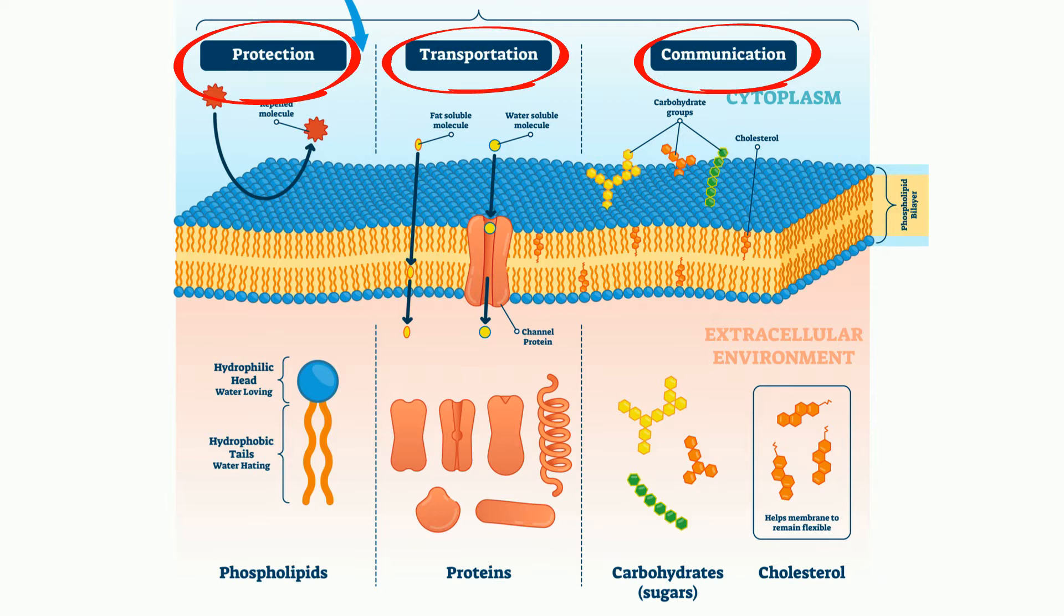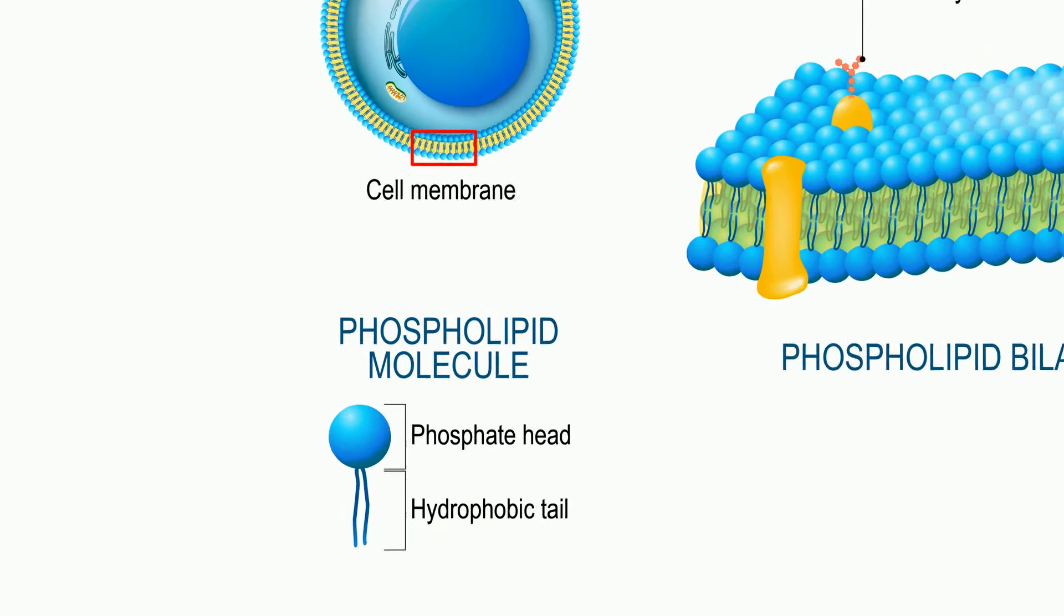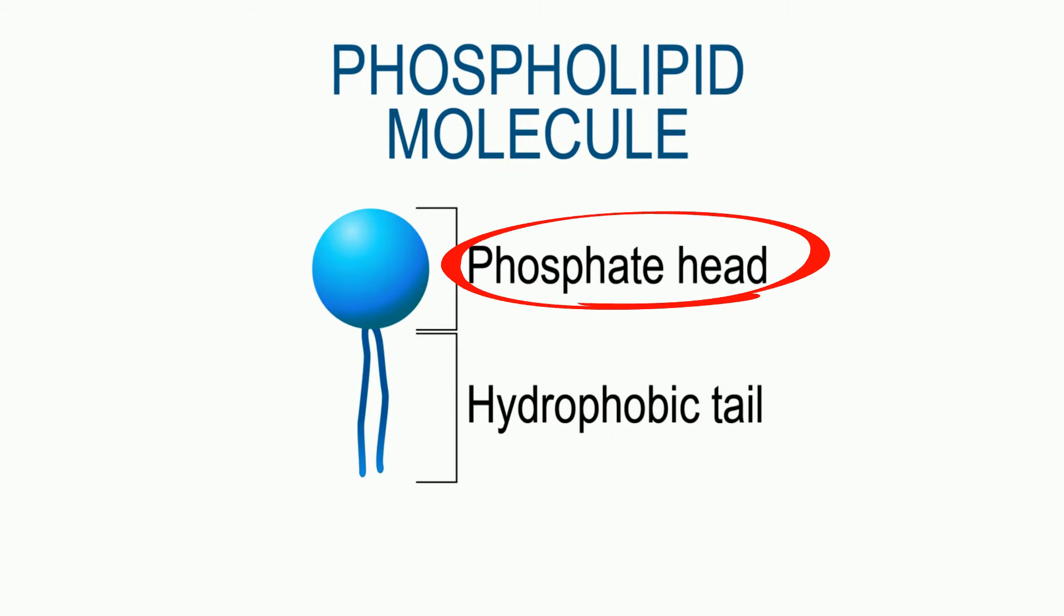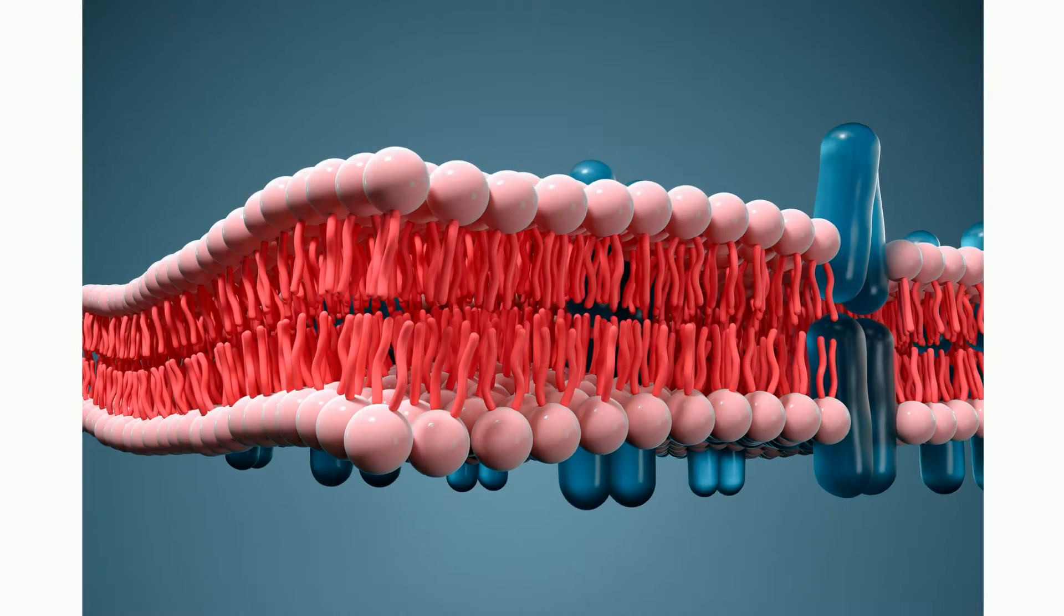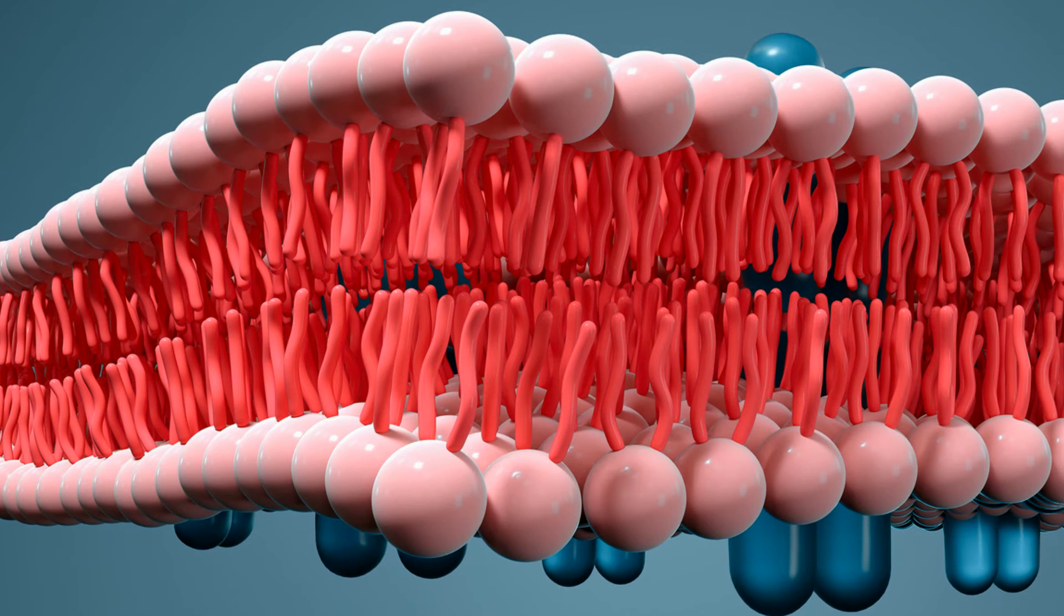The cell membrane is made primarily of phospholipids. Phospholipids have a polar head that attracts water and a non-polar tail that repels water. They pair up tail to tail, as you can see in this picture, and they go all around the cell.